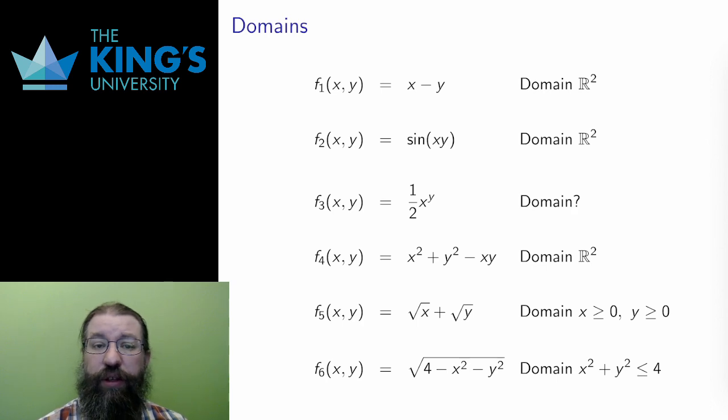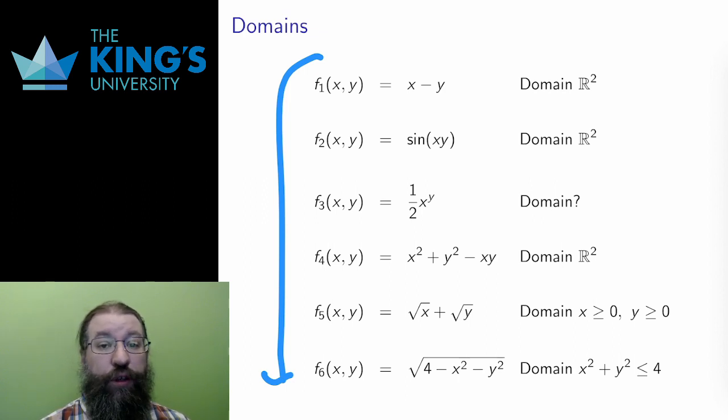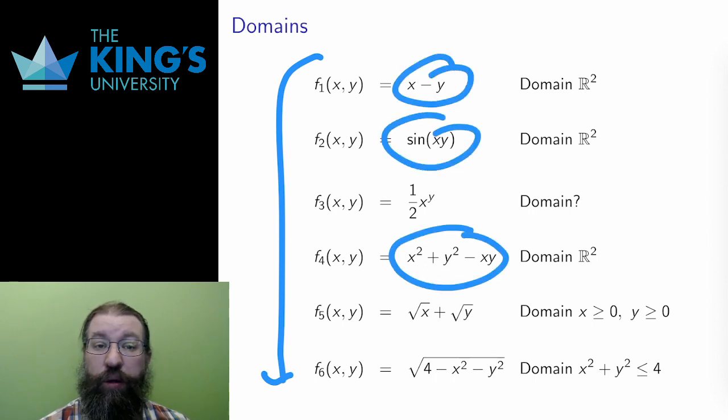I already hinted when I said where they are defined, but the domain of a scalar field is now a subset of R² or R³ where the formulas are defined. Look at these six functions again. For what values of x and y can these expressions work? Can they be calculated? The first, second, and fourth have no domain restrictions. These polynomials and trig functions have no undefined points.